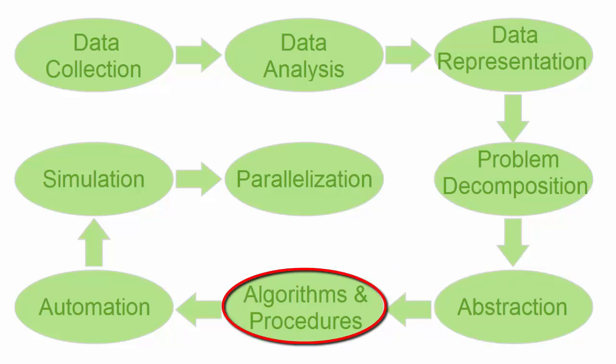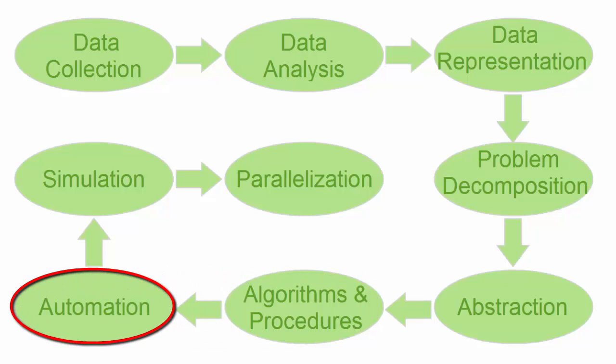Algorithms and procedures is a series of ordered steps taken to solve a problem or achieve some end. Automation is having computers or machines do repetitive or tedious tasks.